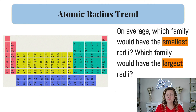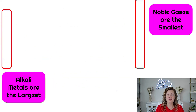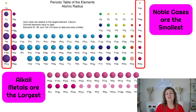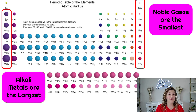On average, which family would have the smallest radii and which family would have the largest radii? Our smallest is of course going to be our noble gases, and the largest are going to be our alkali metals.